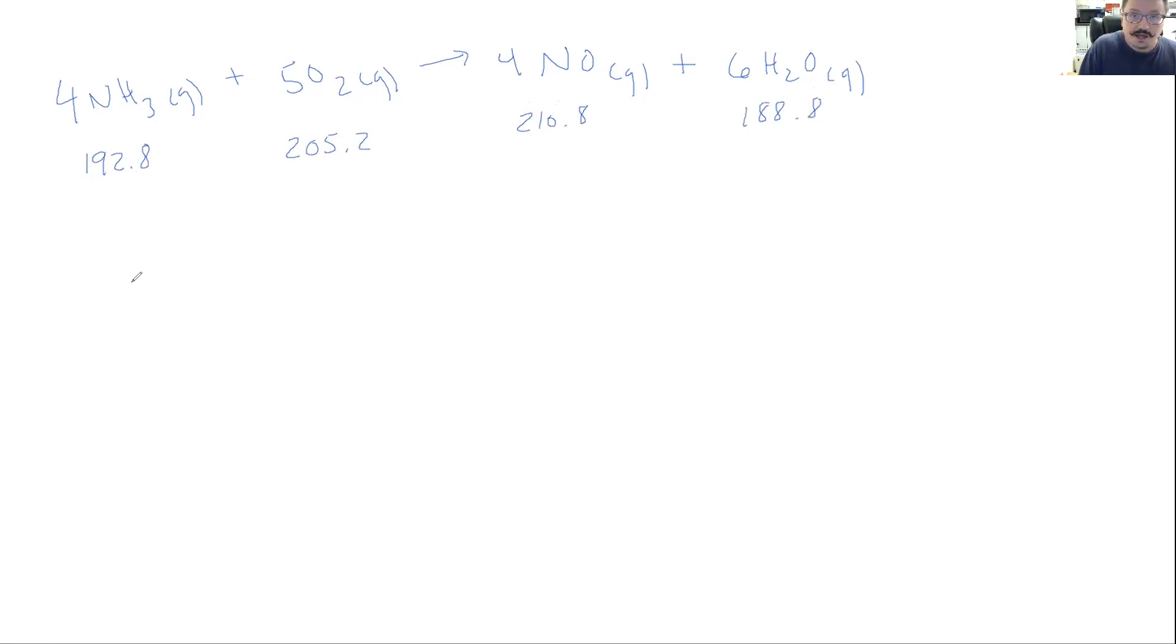So these are the enthalpy formations for a single one of these. So we need to do products first. So the NO, well, we have four of those. So we'd have to multiply four by 210.8. We're going to do the summation. So we're going to add our other product in there. And of course, I'm going to write that incorrectly and have to go in and erase because sometimes my brain and my hand don't move at the same speed. And I'm mad at myself for that. So there's all our products right there. And then from that, we're going to subtract out the reactants 4 times 192.8. And then the other reactant, the oxygen, 5 times 205.2. So yep, looks good. So let's do that. What do we get here? 843.2.